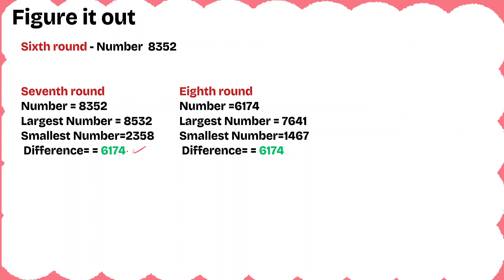Once we get the Kaprekar constant, repeating the process again will give us the same 6,174. With 6,174: the largest number is 7,641 and the smallest is 1,467, and the difference again becomes 6,174. So we need 7 rounds for the number 5,683 to reach the Kaprekar constant.